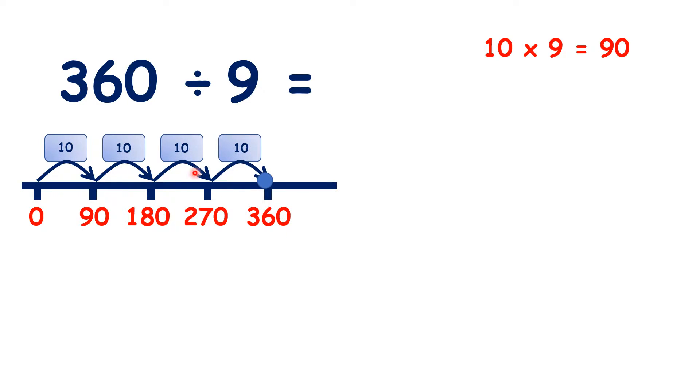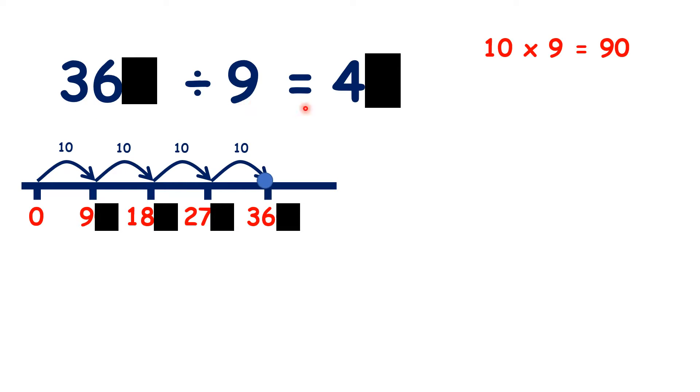So because we counted 4 steps of 10 times 9, we really counted 40 steps, so 360 divided by 9 is 40. And if we know that 36 divided by 9 is 4, we know that 36 tens, so 360, divided by 9 is 4 tens, so 360 divided by 9 is 40.